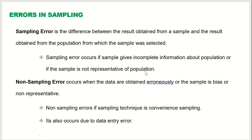If your sample is non-representative, you will have sampling error. Sampling error is caused by error in the sampling process when the sample is not representative of the population. It is defined as the difference between the result obtained from the sample and the result obtained from the population.